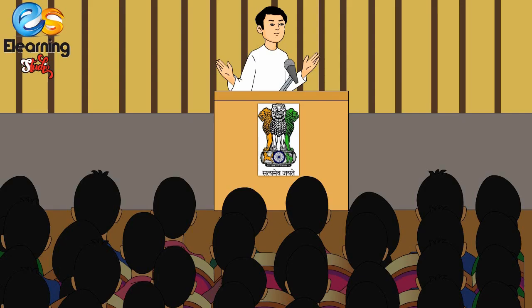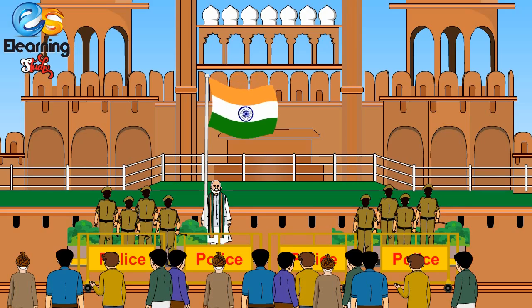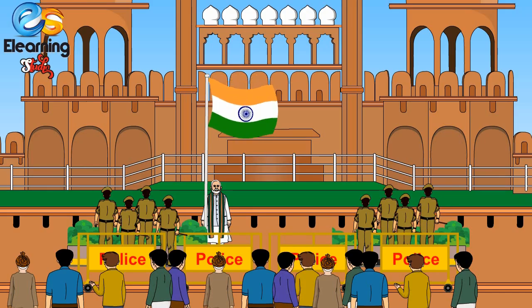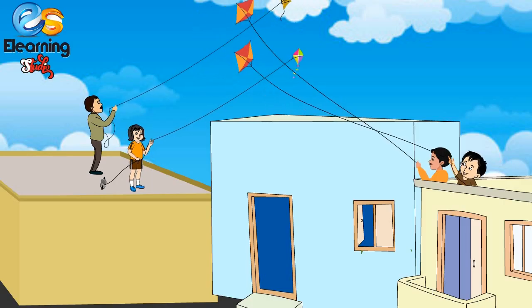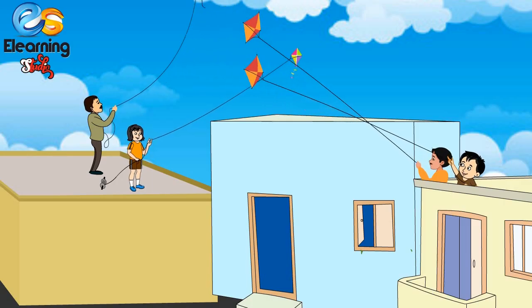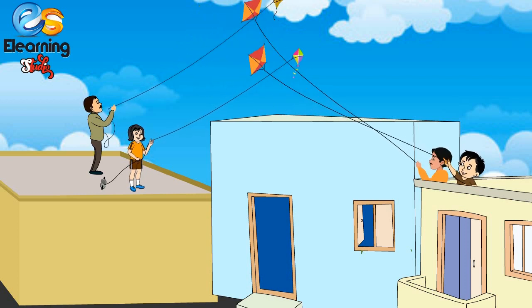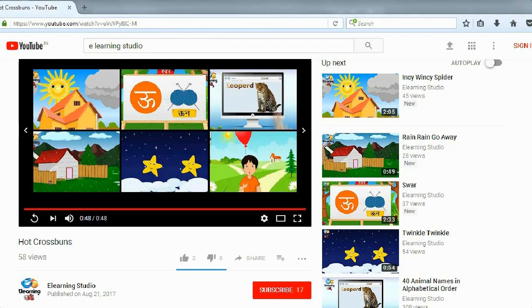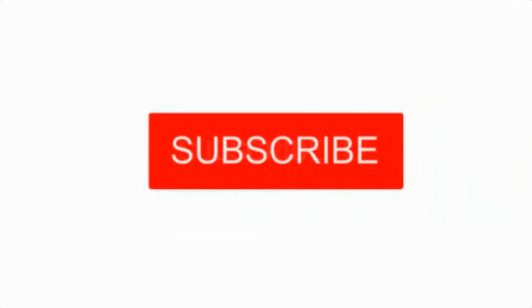The Chief Minister delivers his speech at the function organized in his state capital. Everywhere the national flag is hoisted and the national anthem is sung. Independence Day is a national holiday in India.